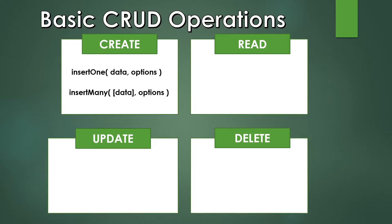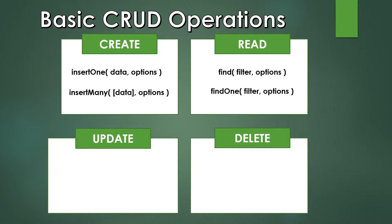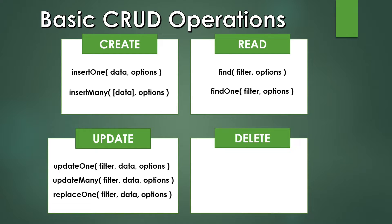We'll explore those options in the individual operation videos. For reading, we have 'find' and 'findOne'. These query the data using a filter object. We'll look at structuring filters in depth in individual videos. Options on both include projection — changing which fields to show or hide. findOne returns only the first matching document.